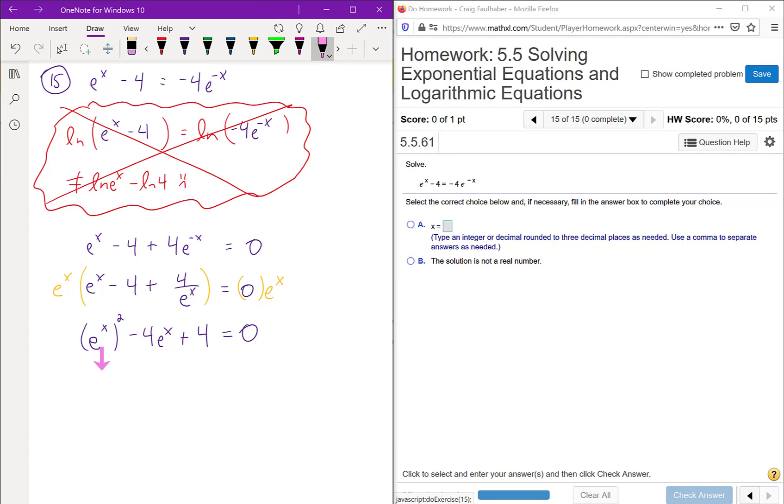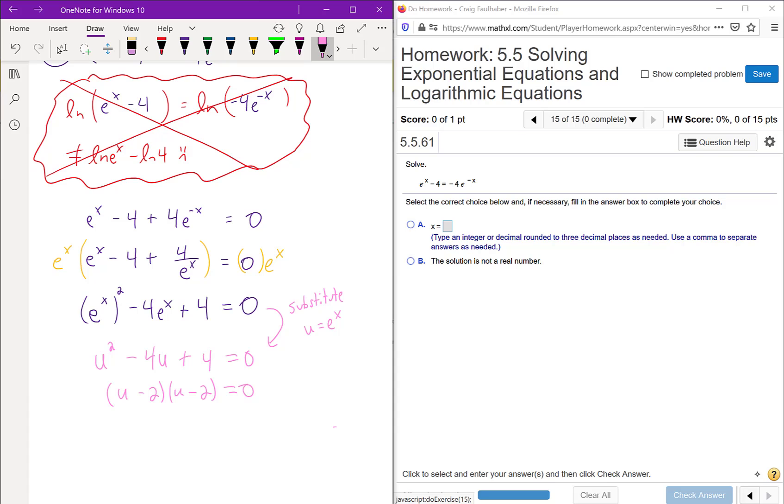If we call this e to the x, say a u, then what we'd have is a u squared minus a four u plus a four. And I bet that equation we could solve. And this does in fact factor into a u minus two and a u minus two on the left. So we get one solution and it's u equals two.